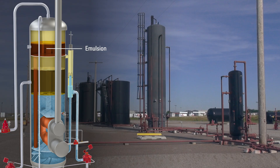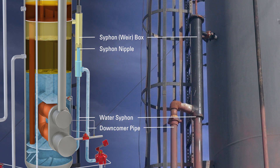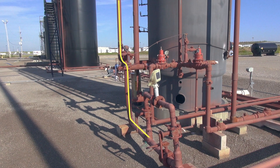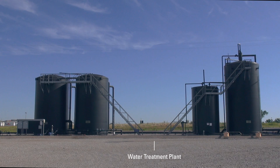As the emulsion is being processed with the use of heat provided by the fire tube, more salt water will be produced. In order to control the level of salt water in the vessel, the vessel comes with what we refer to as a water siphon. The produced water goes up this pipe into what we call the siphon box or the weir box. There is a designated spillover point or a siphon nipple — as the water reaches that level, the water spills over, goes down this downcomer pipe, and again the valve controls only the level in the downcomer pipe. As the liquid comes down the pipe, the valve opens and the water exits to either a fiberglass tank for storage or it goes to the water treatment plant on this location for further processing and then is disposed of there.